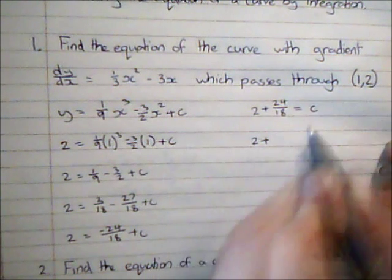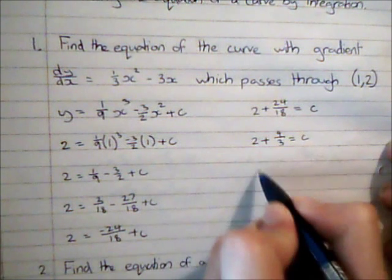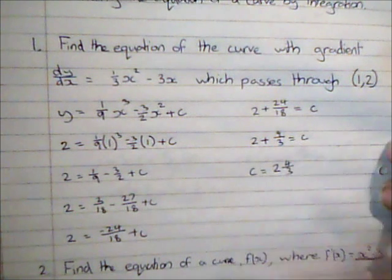Now I'm just going to simplify this expression to 4 thirds. So I can now say c is 2 and 4 thirds.